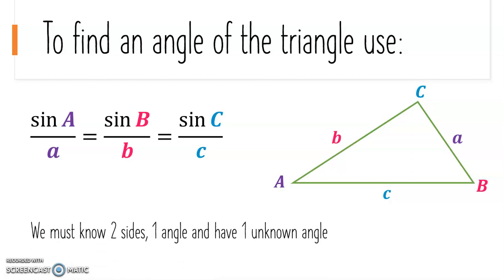We must know two sides, one angle, and have one unknown angle in order to find an angle using the sine rule.